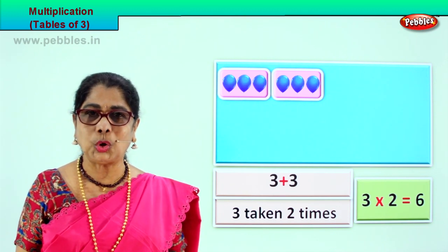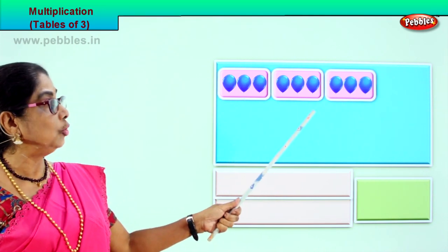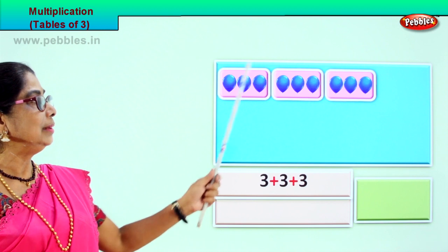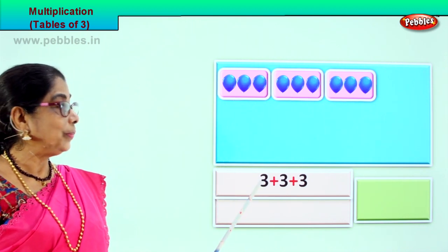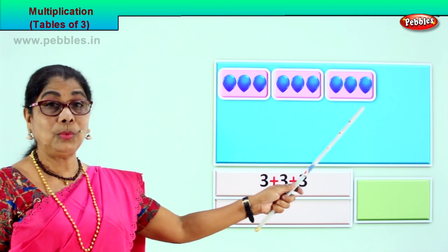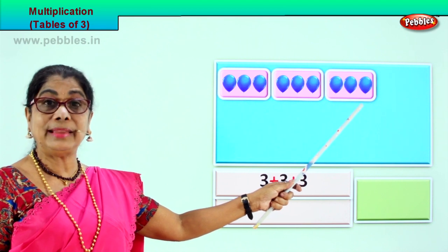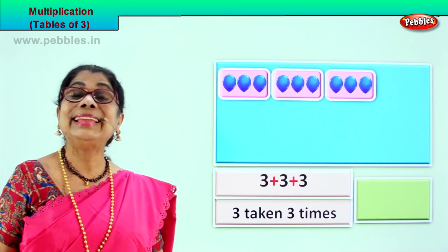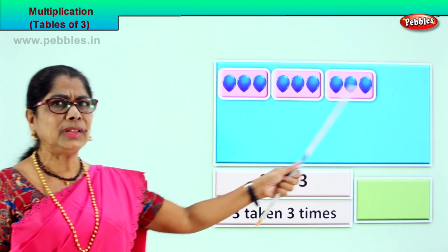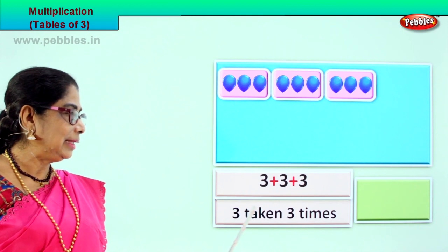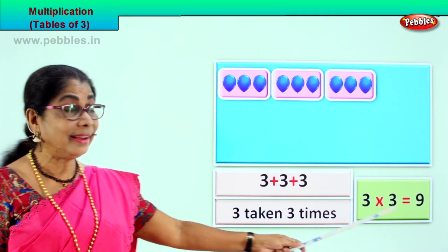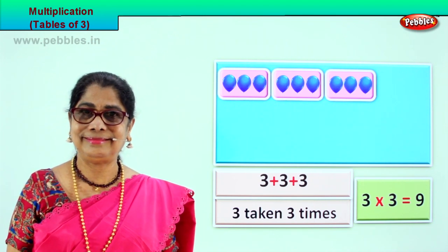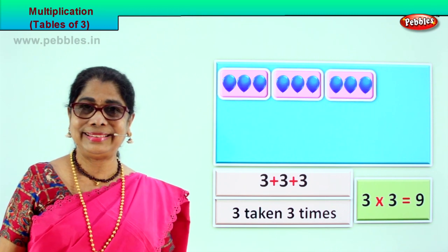Shall we take another grouping of three? Look — one group of three, another group of three, and one more group of three. Three taken how many times? Three times. Multiplication, repeated addition. We add three, three times: three plus three is six, six plus three is nine. Three taken three times: three threes are three into three, nine. Three taken three times is nine.